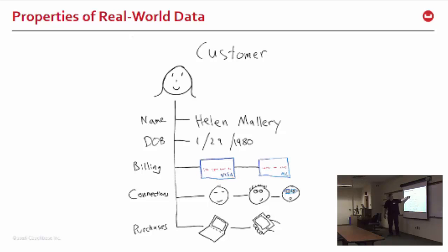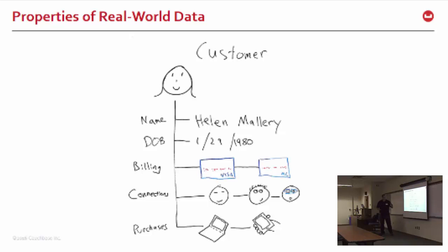I want to model a customer in a single JSON document. Here's my requirements: I have a person named Helen Mallory. She has some billing options — she can pay with one credit card or another. She has some connections — friends or people she follows. And she has a history of purchases — she bought a laptop and a smartphone. That represents a customer right now, with complex embedded information like card number and expiration date.